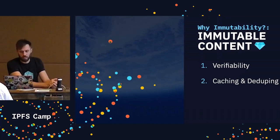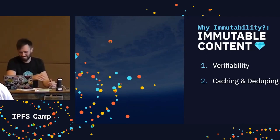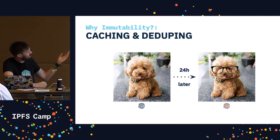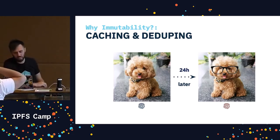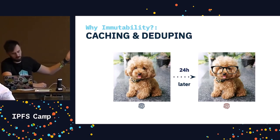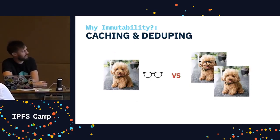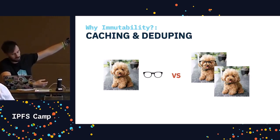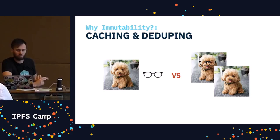Immutable content completely solves the caching problem. Since the data is never going to change, the cache rules are: cache this forever. Going back to our example, if we were using content addressing, our cute poodle has a specific address derived from its content — the hash. If I change that poodle 24 hours later, the address also changes, but it can still be verified, cached, and fetched by anyone. Because the content is immutable, IPFS only really needs to store the changes — the differences. The two files share many of the same bytes, so the amount of data you need to transfer to fetch the other is minimal.